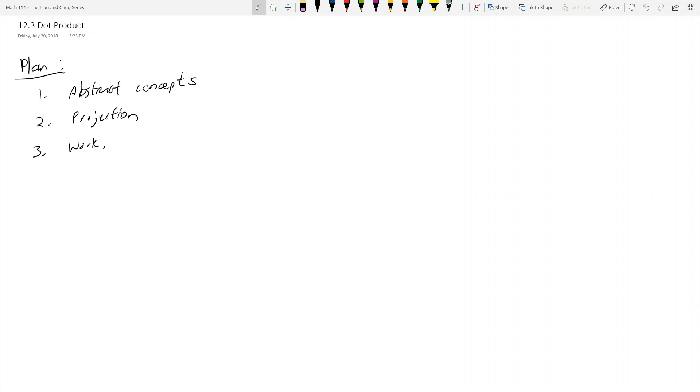Welcome everyone to the Plug and Chug Series for Math 114. This is section 12.3 on the dot product. Hopefully you guys have watched the intro video to the Plug and Chug Series explaining why I call this the Plug and Chug Series and what you guys can look forward to. In section 12.3, I'm going to cover three things: abstract concepts, projection, and work. These should be three very short videos.